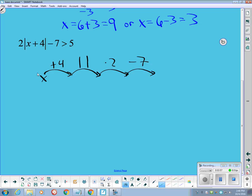That is supposed to get us to a 5. We build the arrows back the other direction, adding 7, dividing by 2, plus or minus, and subtracting 4.